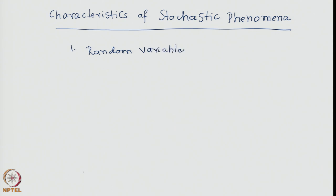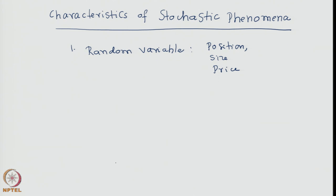One must identify the random variable, and by that what we mean is it is actually a physical variable. It could be, for example, the position of a particle, the size of a particle, or the price of a commodity. One can choose many quantities depending on the problem in question.